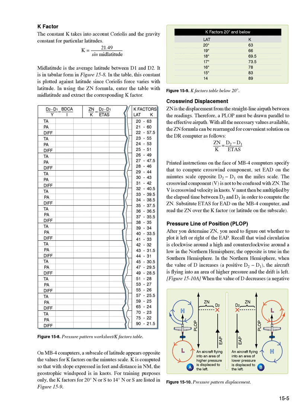K-factor: the constant K takes into account Coriolis and the gravity constant for particular latitudes. K equals 21.49 sin mid-latitude. Mid-latitude is the average latitude between D1 and D2, shown in tabular form in Figure 15-8. In the table, this constant is plotted against latitude since Coriolis force varies with latitude. In using the Zn formula, enter the table with mid-latitude and extract the corresponding K-factor. On MB4 computers, a subscale of latitude appears opposite the values for K-factors on the minute scale. K is computed so that with slope expressed in feet and distance in nautical miles, the geostrophic wind speed is in knots.